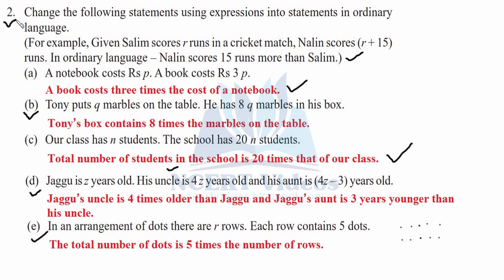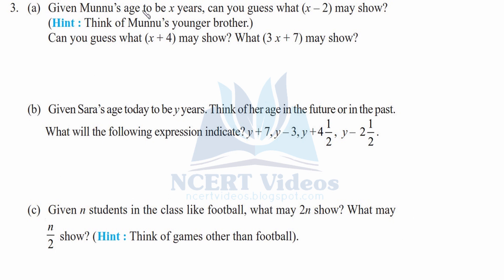Question 3, part a: given Munnu's age to be x years, what does x minus 2 show? It shows his younger brother's age — he is 2 years younger than Munnu. What does x plus 4 show? It may represent an elder brother who is 4 years older than Munnu. What does 3x plus 7 show? It may represent his mother's age — 3 times x plus 7.